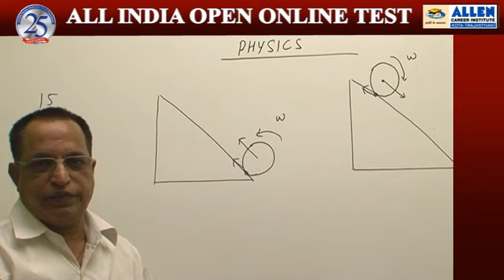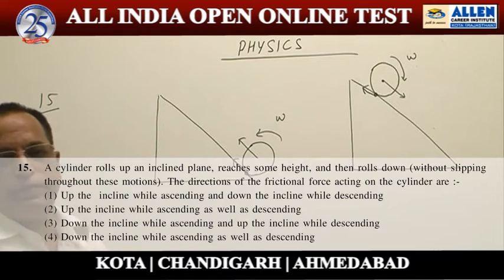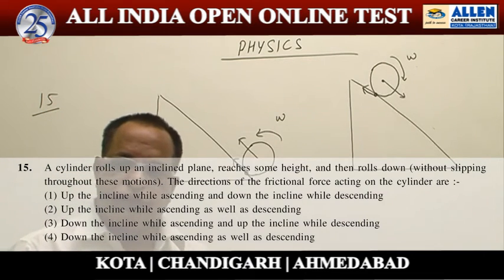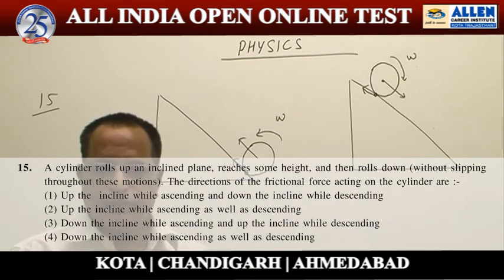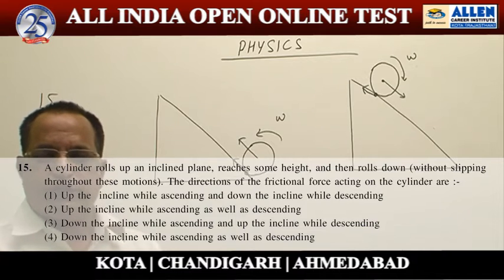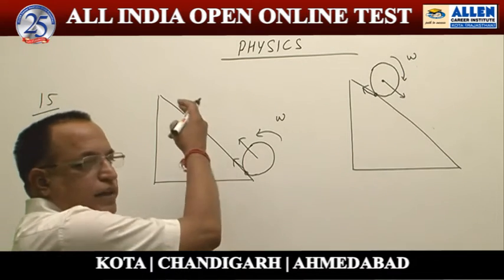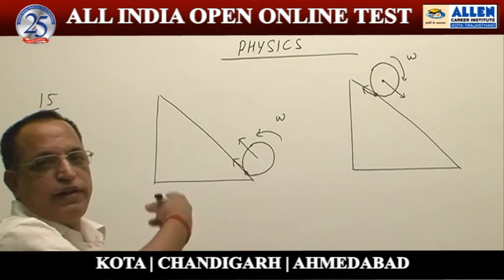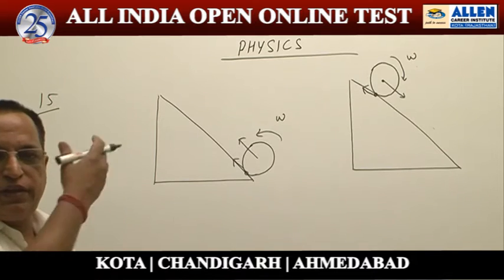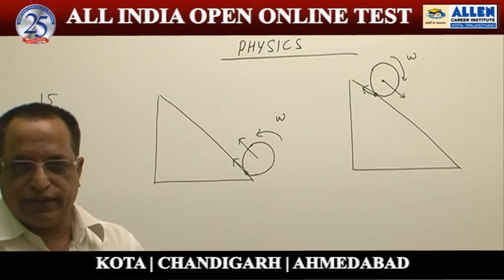Question number 15. In this problem, they are asking us the direction of friction force. Our cylinder is rolling up. As it is rolling up, its speed as well as omega will decrease.